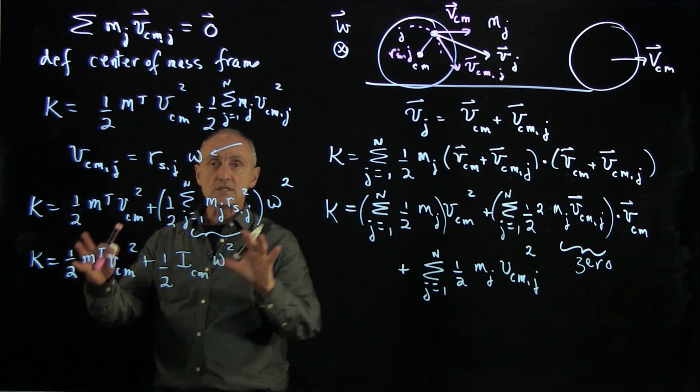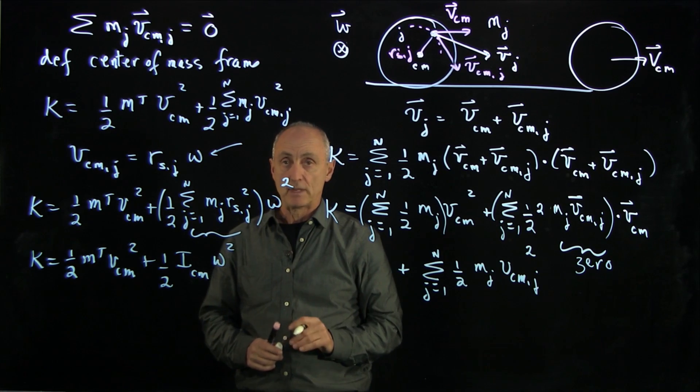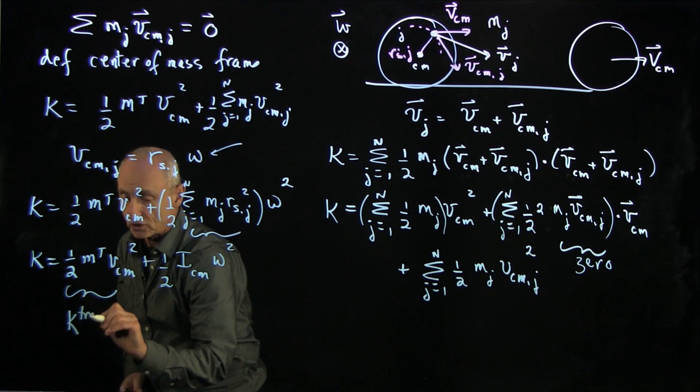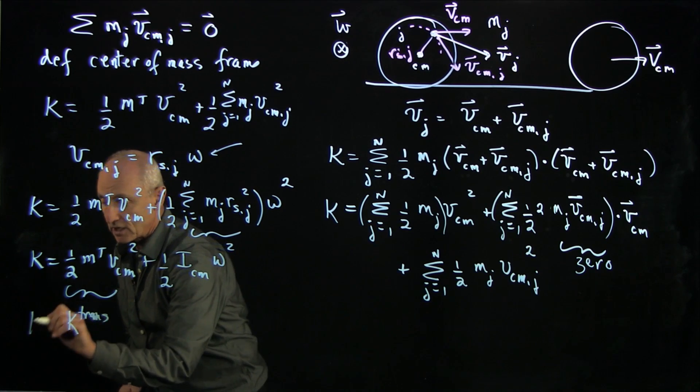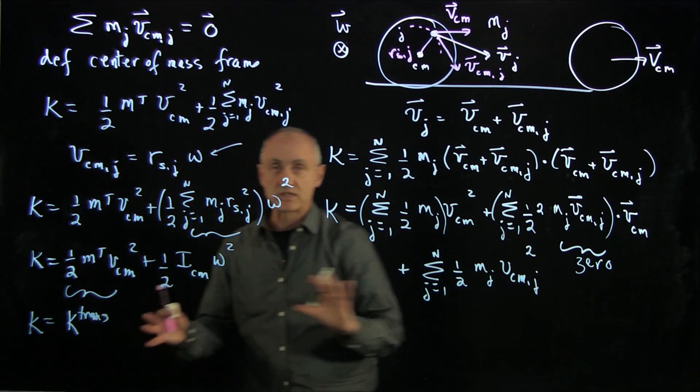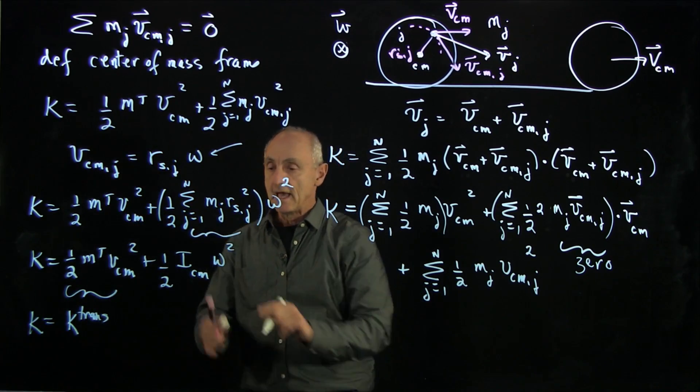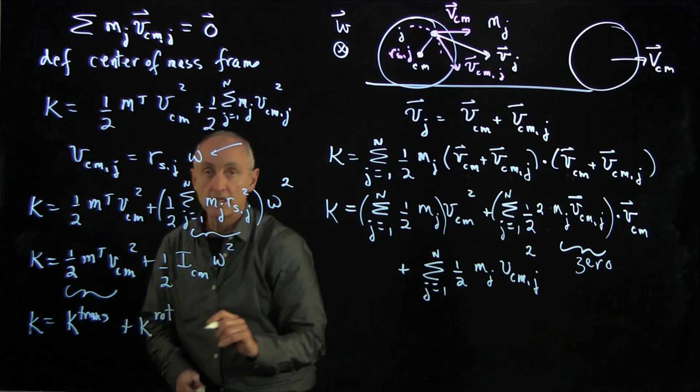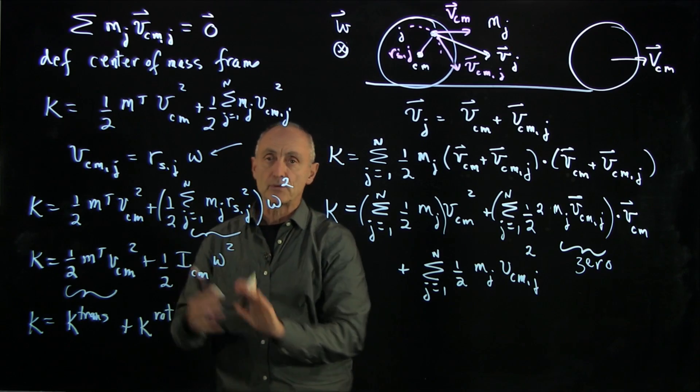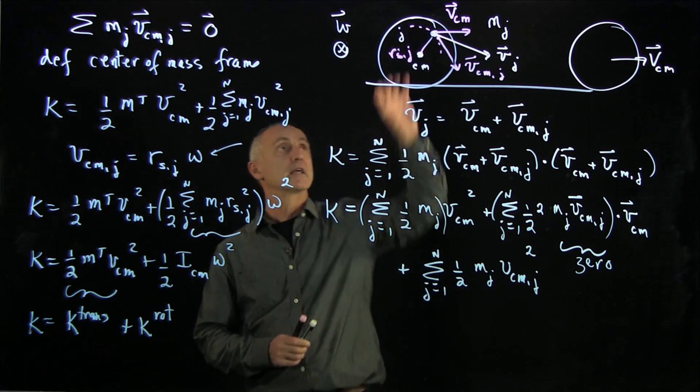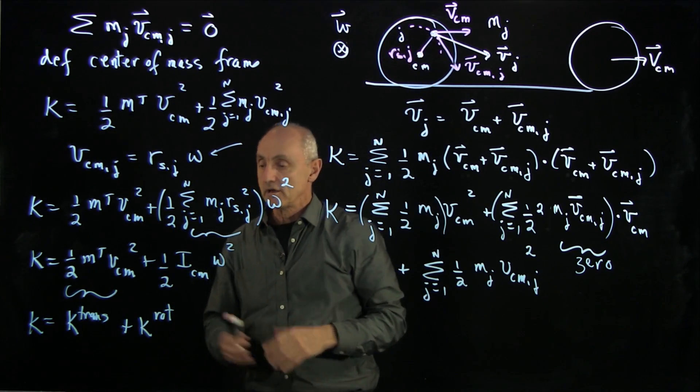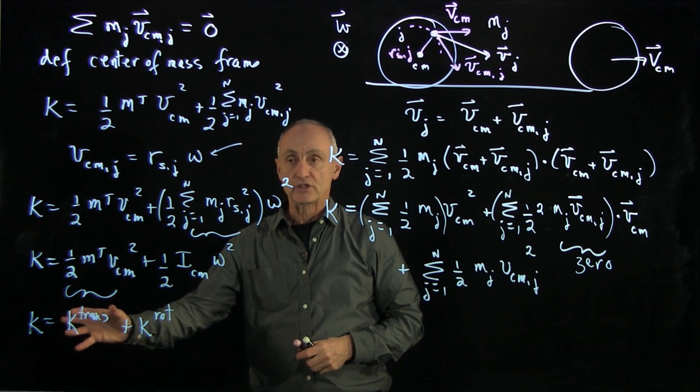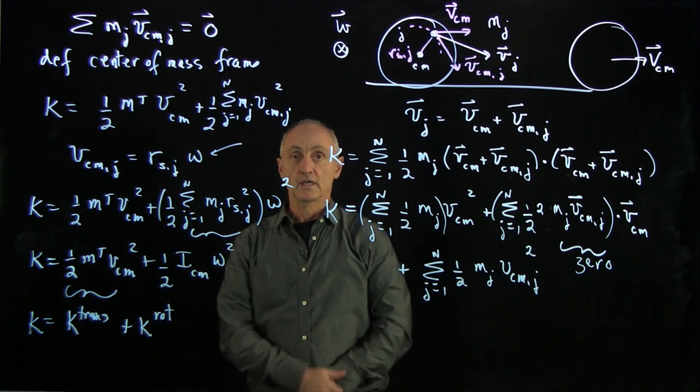Now, this is the same crucial decomposition that we've talked about many times. This first piece is what we call the translational kinetic energy, because it just represents how the center of mass is moving. And the second piece is what we call the rotational kinetic energy, because it's a representation of just the kinetic energy of rotation. For example, if you were in the center of mass frame, there would be no translational energy, and this would be the only kinetic energy.